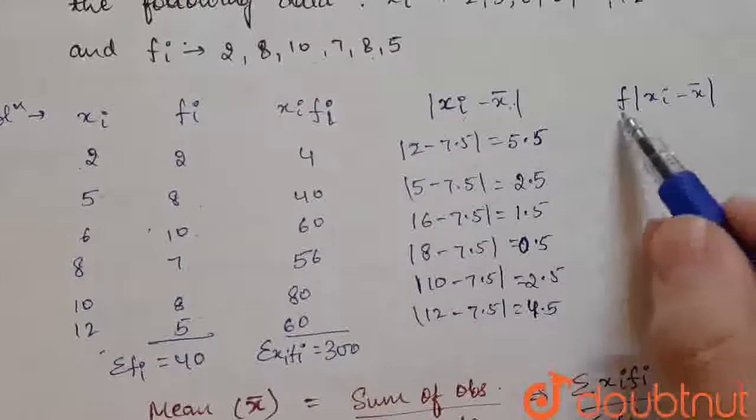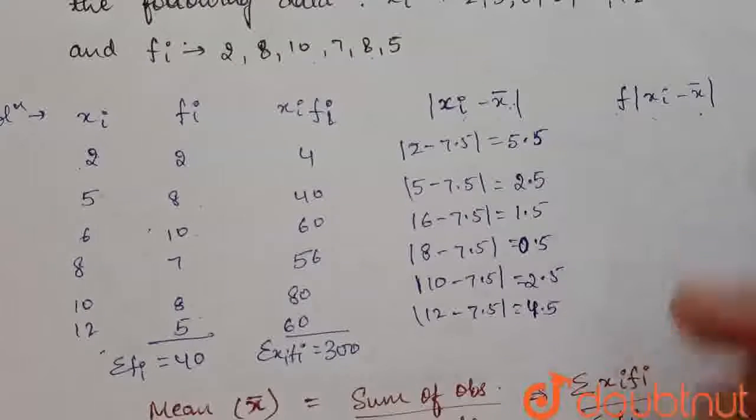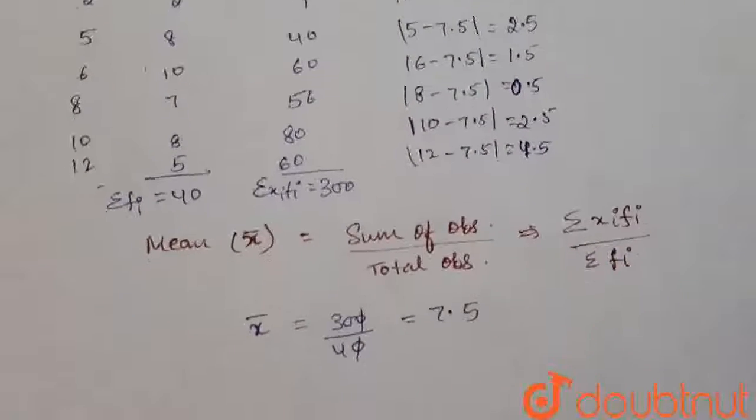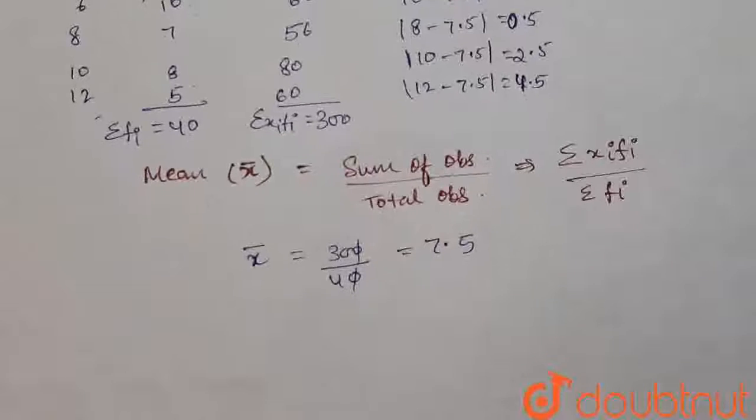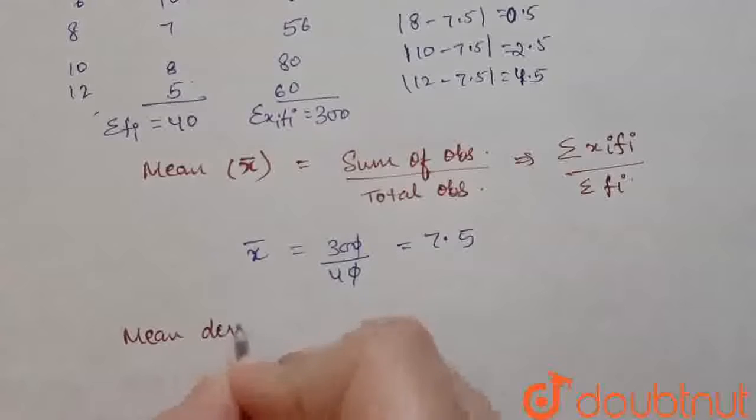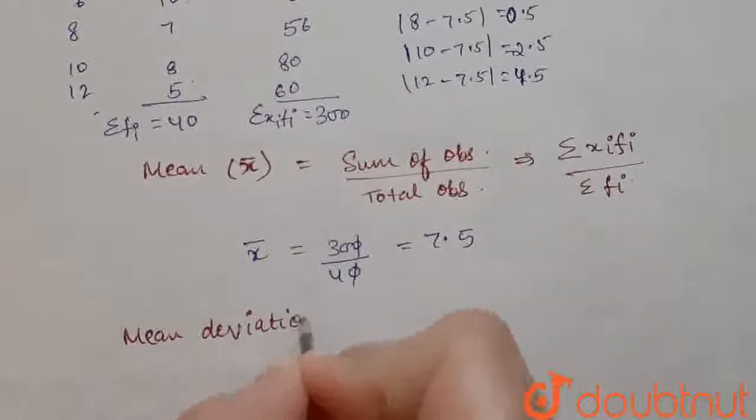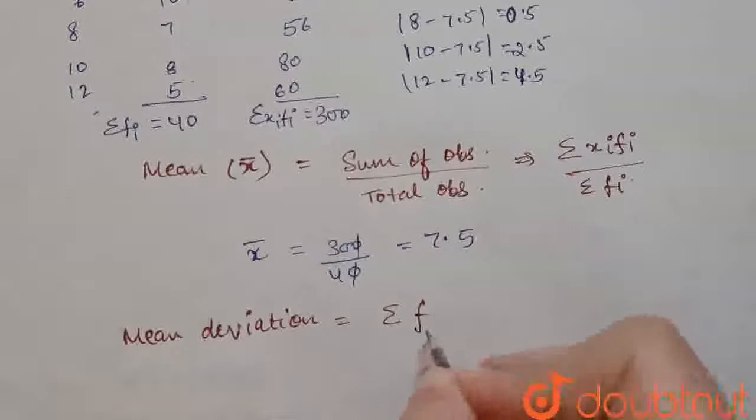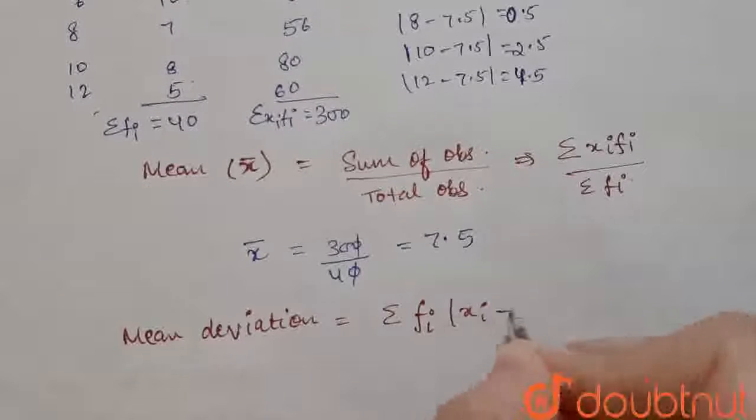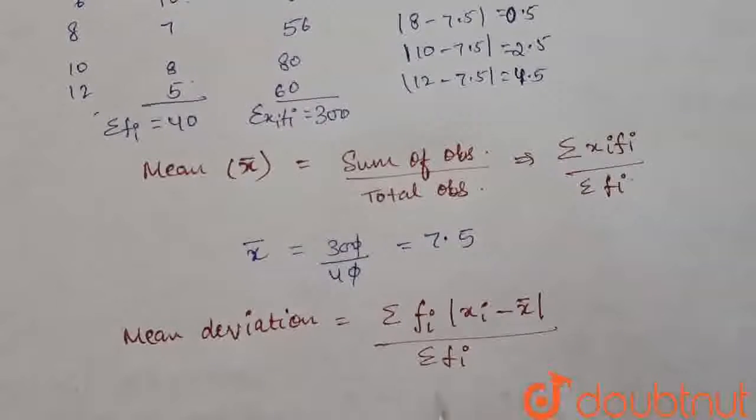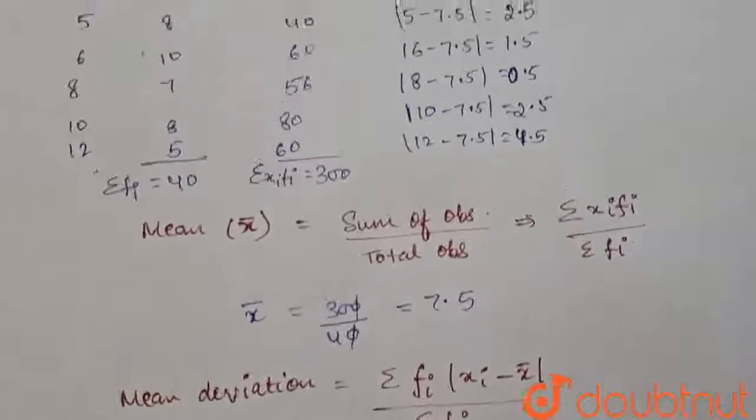Now, we will calculate f multiplied by this. We are calculating this because the formula of mean deviation is mean deviation is equal to summation of fi mod of xi minus x bar divided by summation of fi. We are going to use this formula to calculate the mean deviation about means. Therefore, we are calculating this.